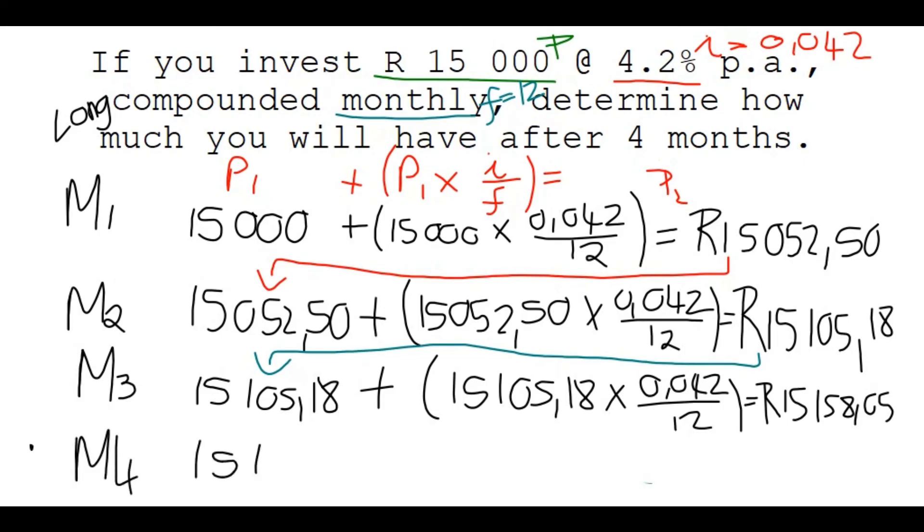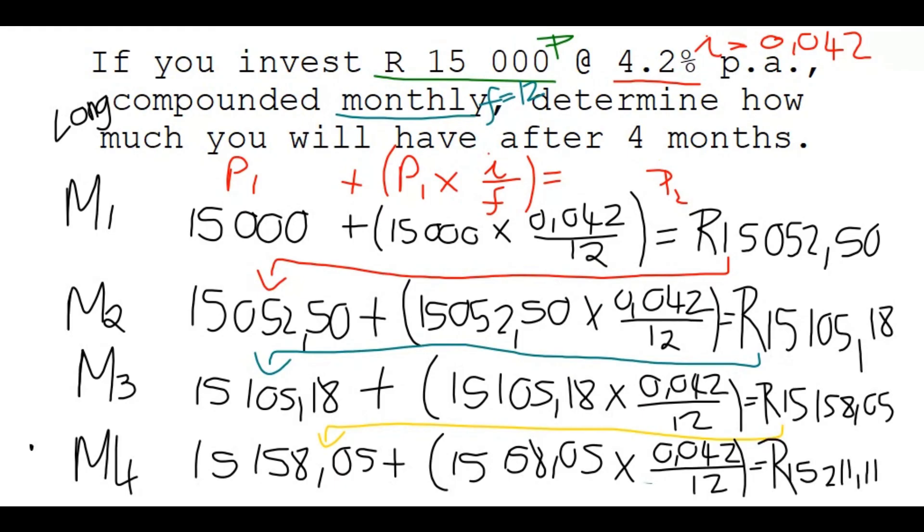Last month now, month 4, so you start with that ending amount again. You start with that amount again, and you find out the interest you now have, which is 0.042, that's your interest rate over 12, and now finally, after 4 months, you end with 15,211 Rand and 11 cents. So you made about 211 Rand interest after you invested 15,000 Rand.